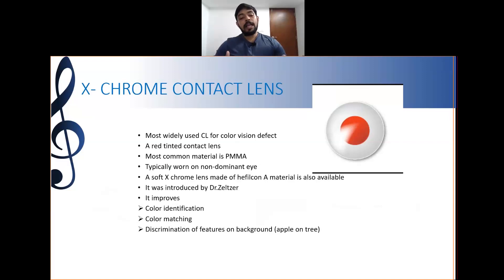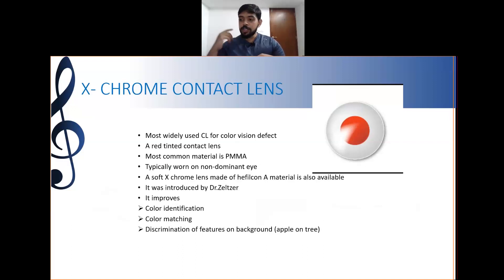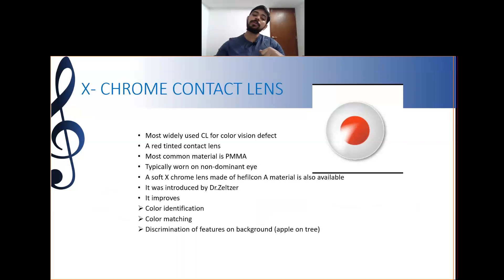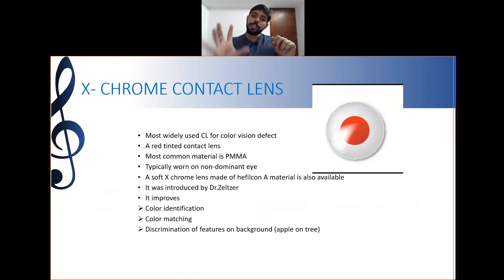X-Chrome lenses help in color matching — the patient will be able to match colors with the help of the lens when they previously could not without it. They also aid in discrimination of features from background, for example differentiating a red apple in a tree, or distinguishing red traffic signals from other colors.